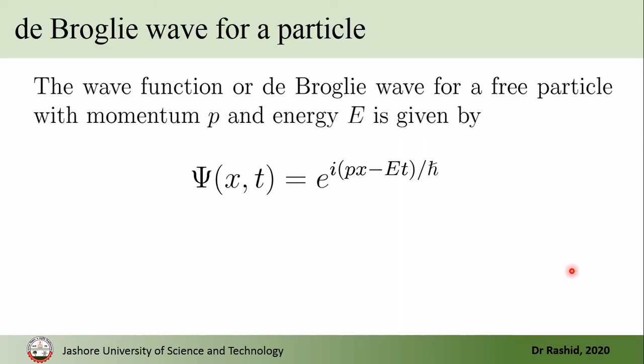The wave function of a free particle — that is the de Broglie wave for a free particle with momentum p and energy — is given by ψ = e^(i(px − Et)/ℏ).